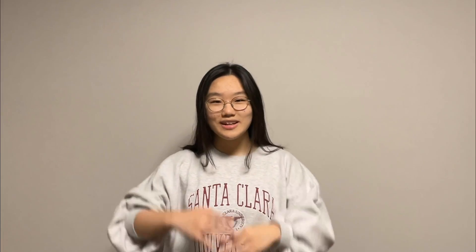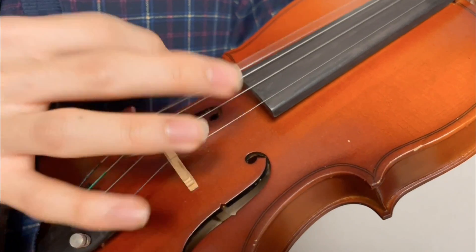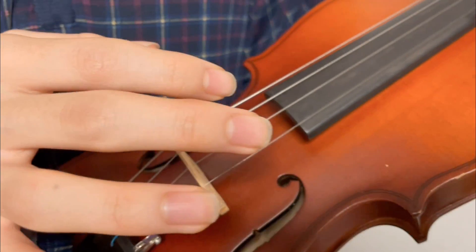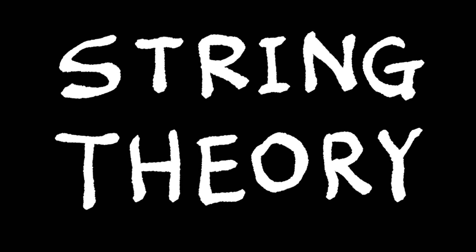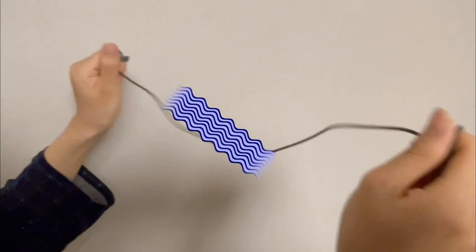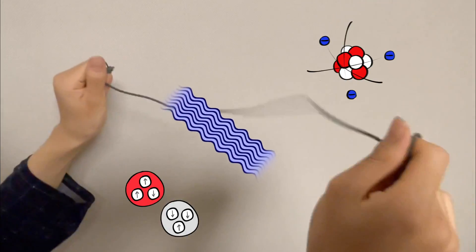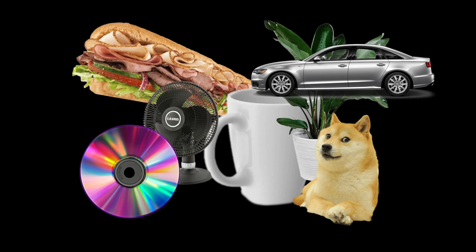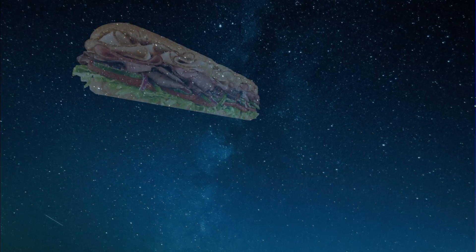Sounds good enough. We can create any possible sounds only by manipulating the four strings of a violin. String theory works pretty much the same. If a string vibrates in a certain way, different elements are made, making up what we call material — and of course the rest of the universe as well.